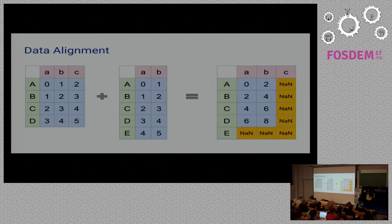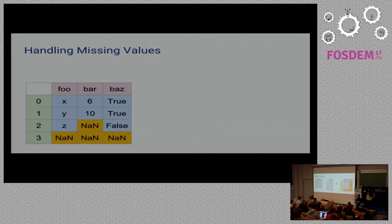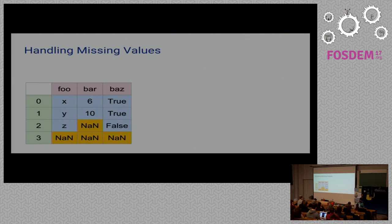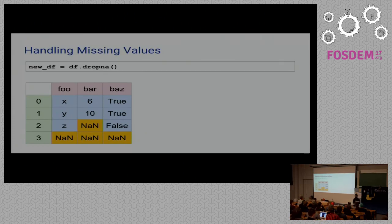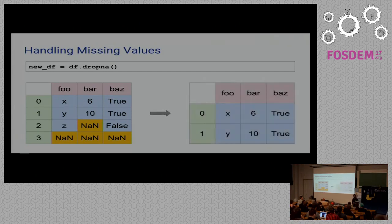We see a lot of NaN values — how can we handle them? Just like when coding, either we eliminate the problem or we fix it. We can either drop the NaN values or fill them with some value. If you want to drop them, use the dropna method, which by default drops all rows that have at least one NaN value.